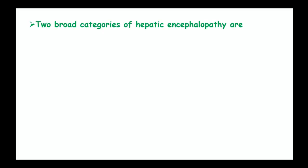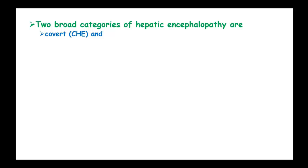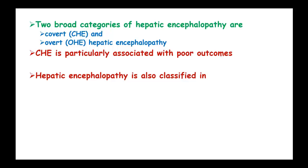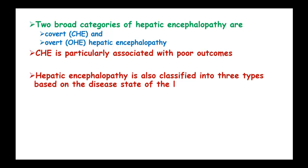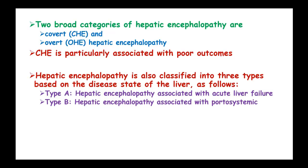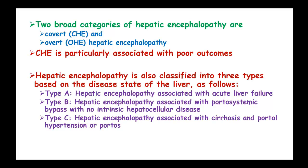There are two broad categories of hepatic encephalopathy: covert hepatic encephalopathy and overt hepatic encephalopathy. The covert form is particularly associated with poor outcomes. Hepatic encephalopathy is also classified into three types based on the disease state of the liver: Type A associated with acute liver failure, Type B associated with portosystemic bypass with no intrinsic hepatocellular disease, and Type C associated with cirrhosis and portal hypertension or portosystemic shunts.